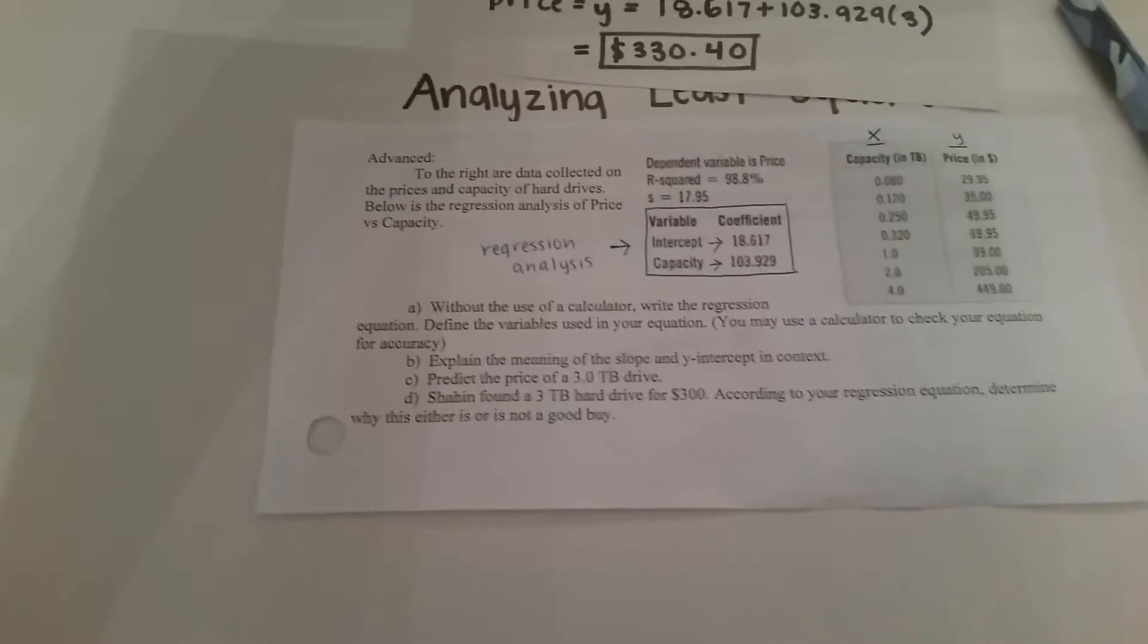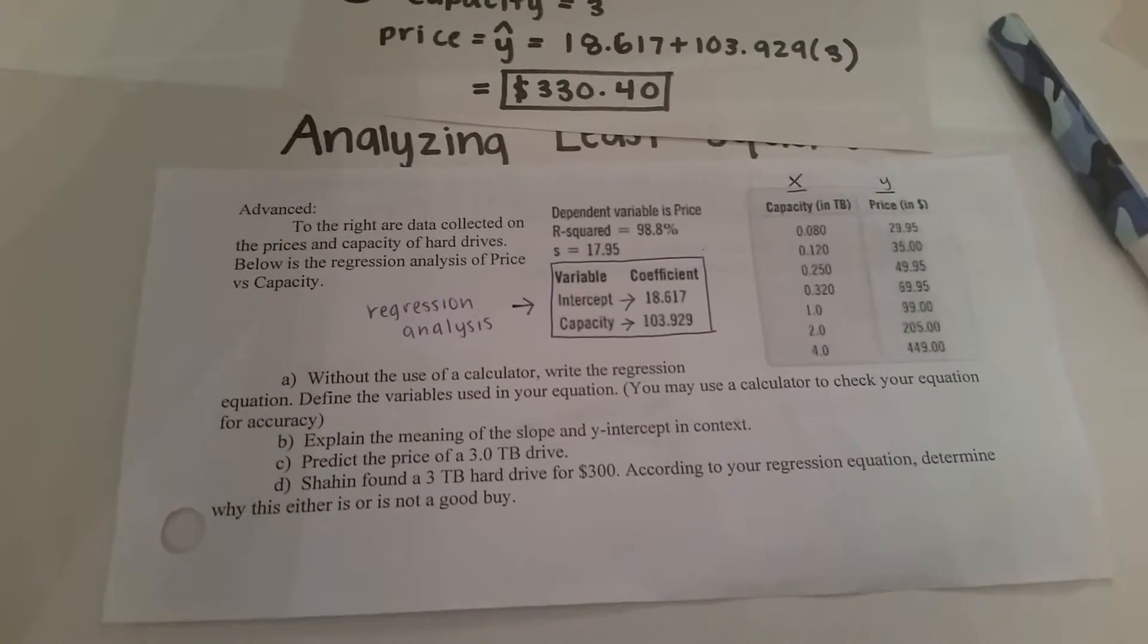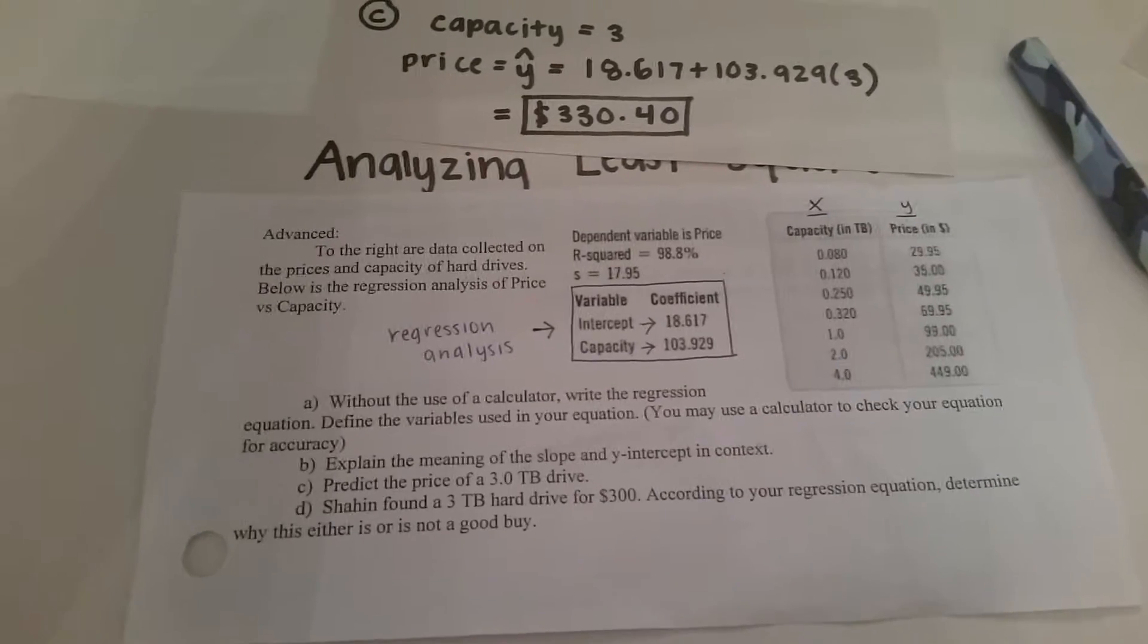Now Shaheen found a 3 TB hard drive for 300 dollars according to your regression equation determine why this is or is not a good buy.